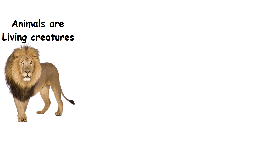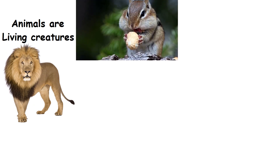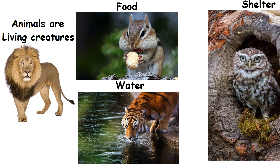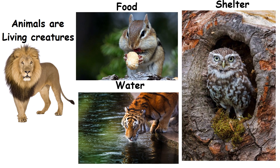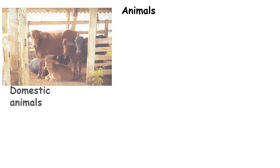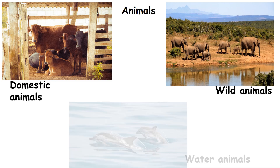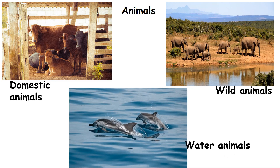Animals are living creatures. They require food, water and shelter to live. Animals are classified into domestic animals, wild animals and water animals.